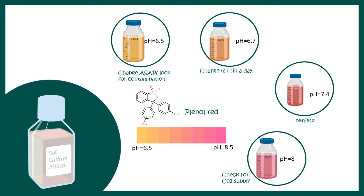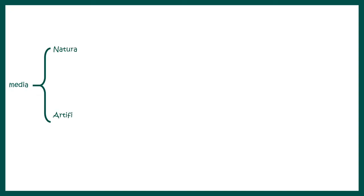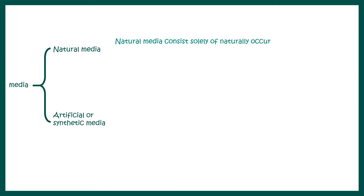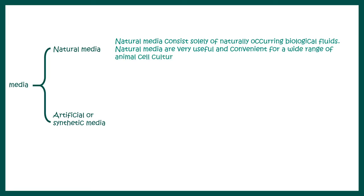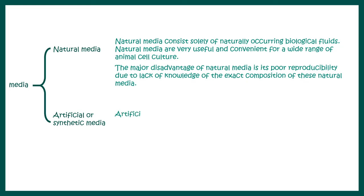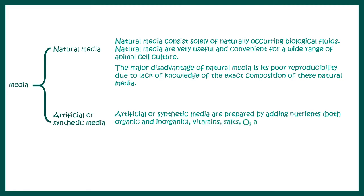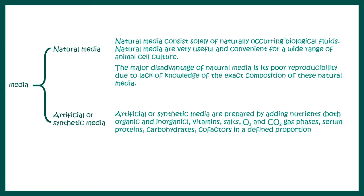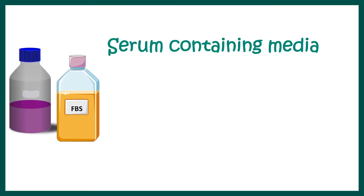Cell culture media can be divided into two types: natural media and synthetic (artificial) media. Natural media contains growth factors and important components for cellular growth, but is undefined and highly variable, making it less useful for laboratory research. Artificially synthesized media has all components balanced with very little batch-to-batch variation, ensuring experimental reproducibility. The component proportions remain consistent across batches, which is why artificial media is preferred for culturing cells in the lab.